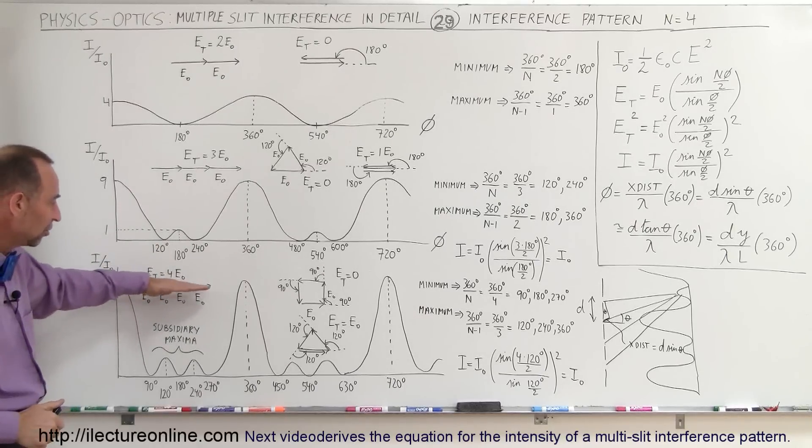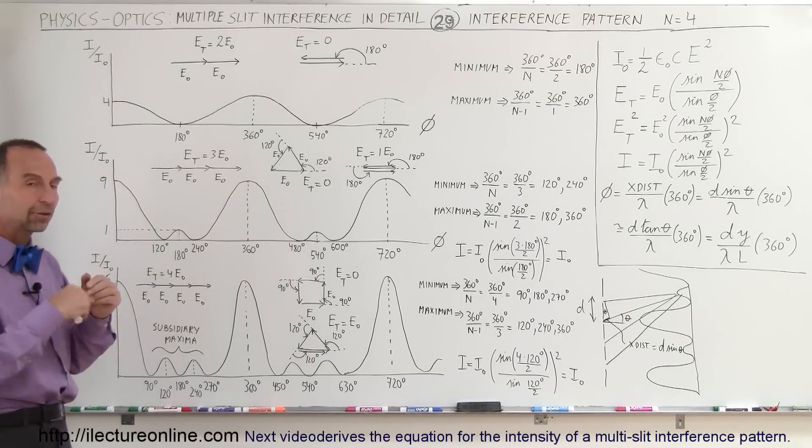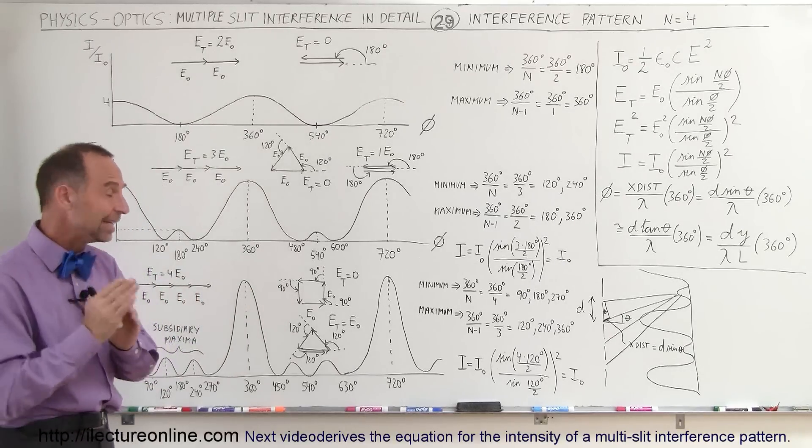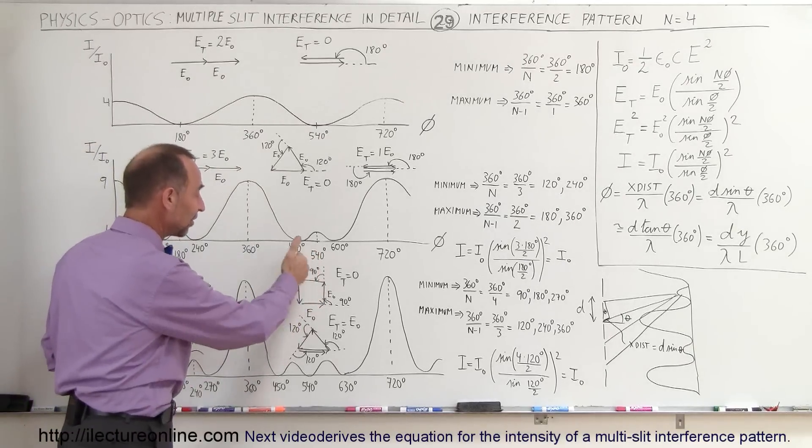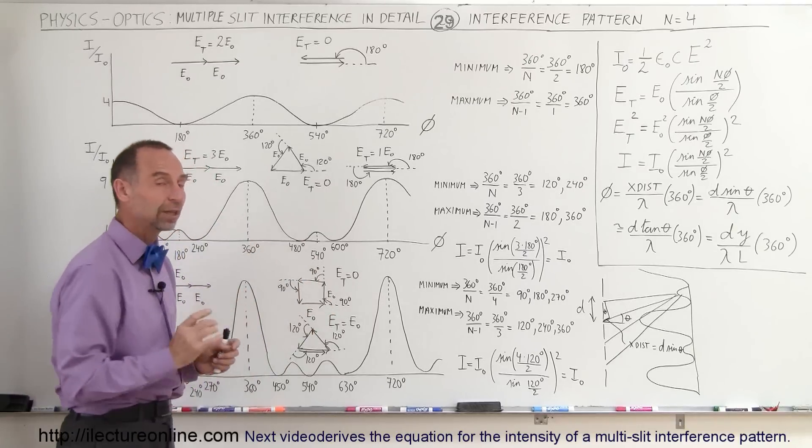So here we have a situation where they all line up, so they all add up. The total is equal to four times the electric field oscillation of a single one. But here, if the phase difference is 90 degrees, notice that the phasor doesn't come around, and the total add up to zero, so we'd find a minimum in this particular case.